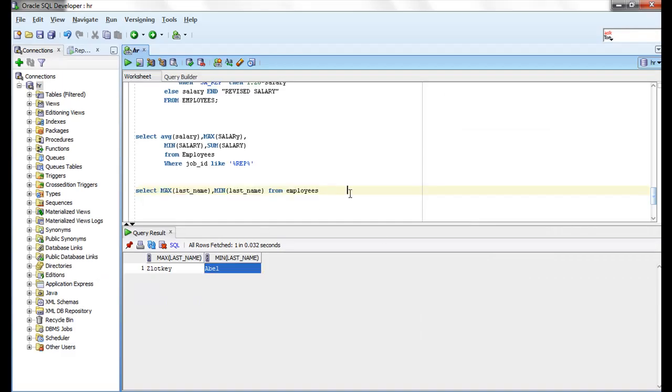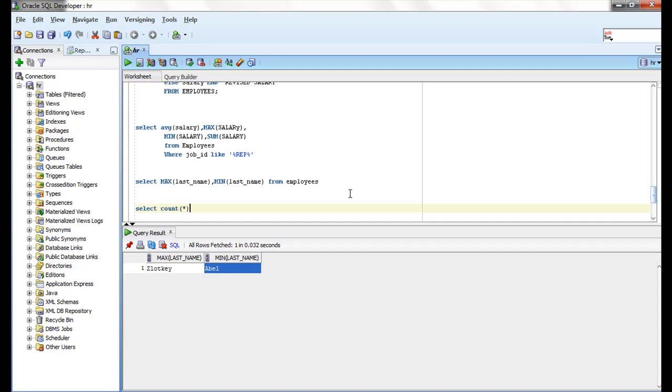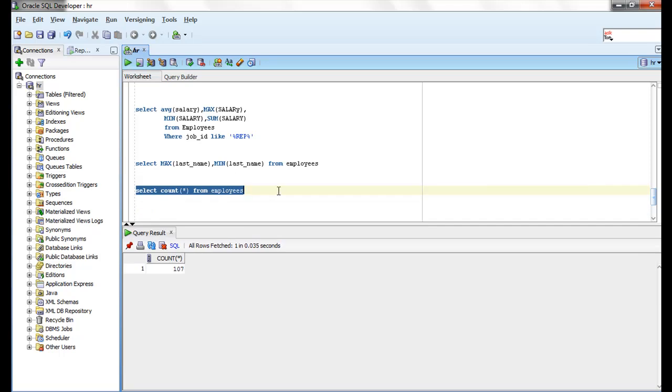So let me show you. COUNT star FROM employees gives you 107. Whereas if we use WHERE employee ID equals 80, this gives 34 records because COUNT star, if you use the WHERE clause included in the SELECT statement, COUNT star returns the number of rows that satisfy the condition in the WHERE clause.